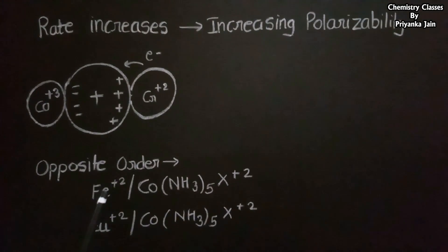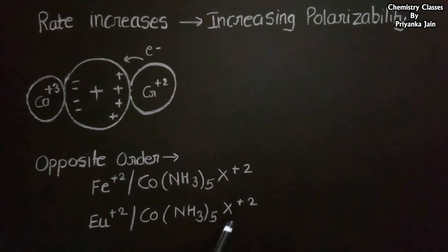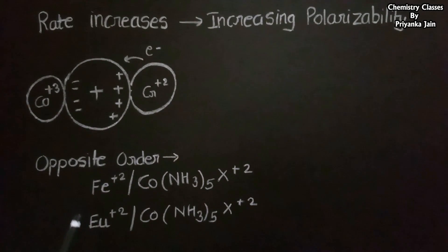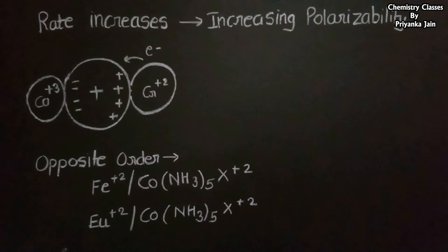However, there are cases where the opposite order is found — for example, in reactions of Fe²⁺ versus [Co(NH3)5X]²⁺ complexes and Eu²⁺ versus [Co(NH3)5X]²⁺ complexes. In these cases, we consider the stability of the transition state formed: greater the stability of the transition state, faster the reaction, which leads to the opposite order. This concludes the inner sphere reaction mechanism.